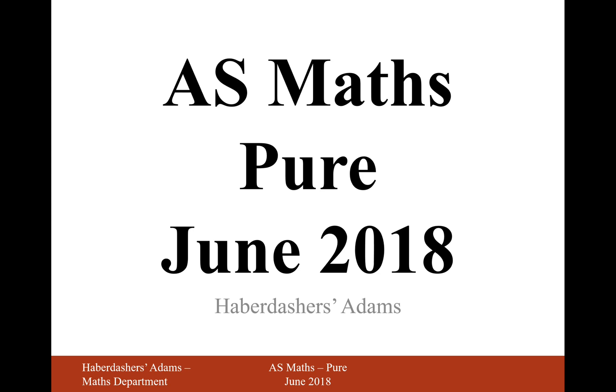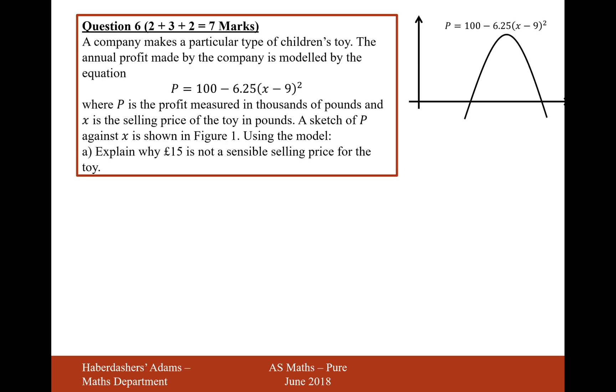Hello there and welcome to the June 2018 paper. Here we're looking at question 6. A company makes a particular type of children's toy. The annual profit made by the company is modeled by the equation P equals 100 minus 6.25 brackets X minus 9 squared, where P is the profit measured in thousands of pounds and X is the selling price of the toy in pounds. A sketch P against X is shown in figure 1. Using the model, explain why £15 is not a sensible price to sell the toy at.